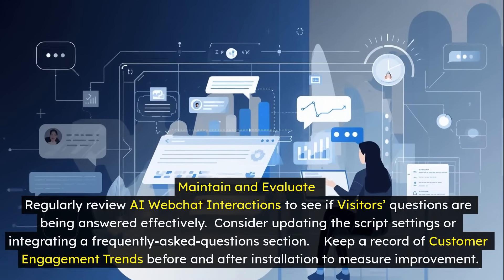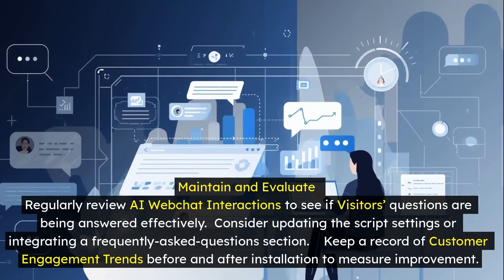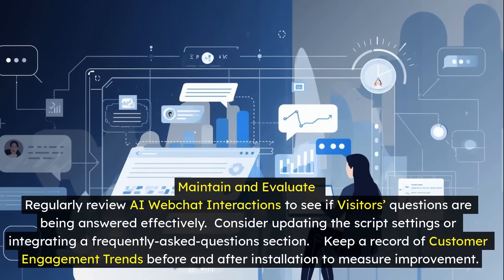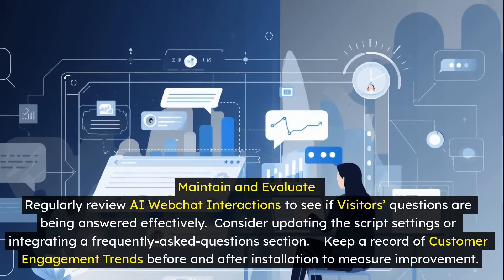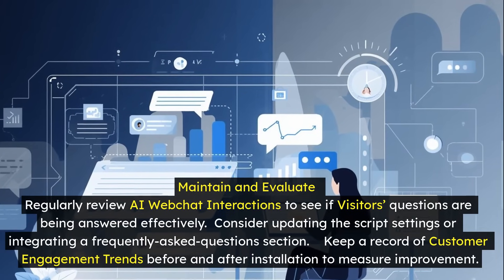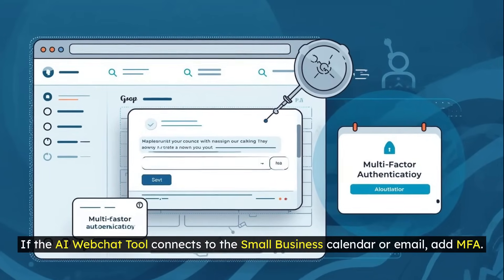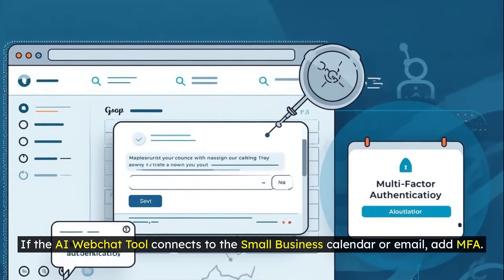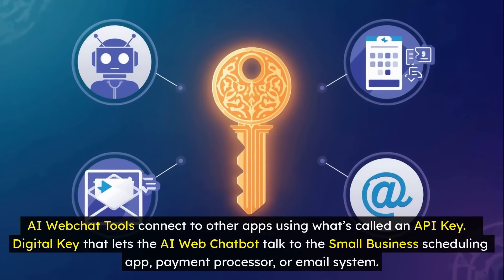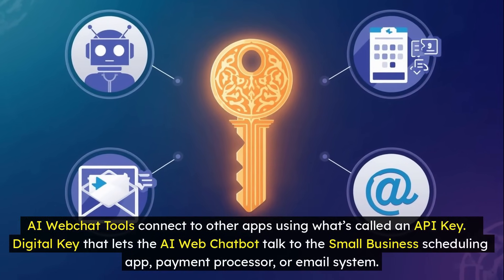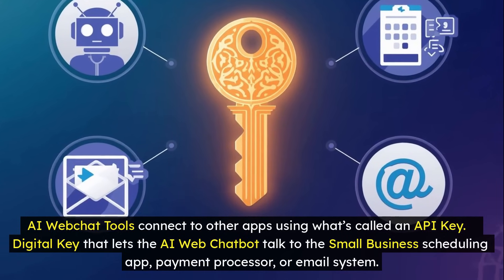Maintain and evaluate regularly: review AI web chat interactions to see if visitors' questions are being answered effectively. Consider updating the script settings or integrating a Frequently Asked Questions section. Keep a record of customer engagement trends before and after installation to measure improvement. If the AI web chat tool connects to the small business calendar or email, add MFA. AI web chat tools connect to other apps using an API key — a digital key that lets the AI web chat bot talk to the small business scheduling app, payment processor, or email system.